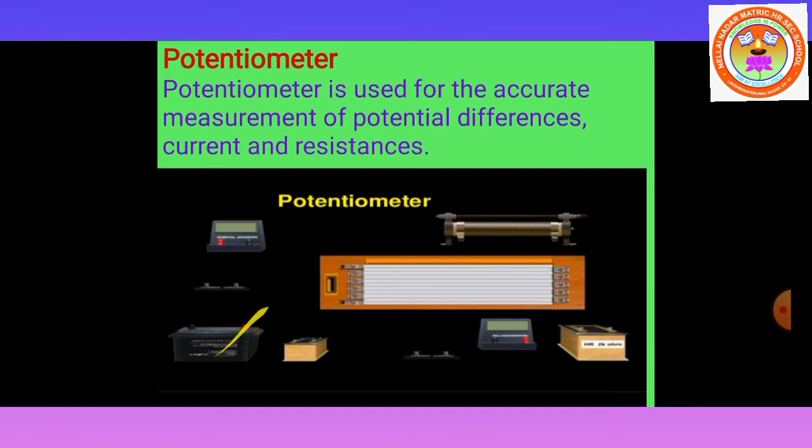This potentiometer is used to compare the electromotive forces of two cells — one is a Leclanche cell and another is a Daniel cell. These are the two cells. This is a key, this is a DPDT switch — double pole, double throw switch. This is a battery. These are the apparatus going to be used for the potentiometer experiment.